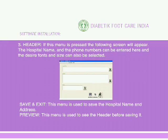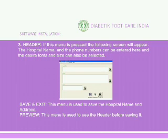Header: If this menu is pressed, the following screen will appear. The hospital name and phone numbers can be entered here, and the desired fonts and size can also be selected. The Save and Exit menu is used to save the hospital name and address. The Preview menu is used to see the header before saving it.